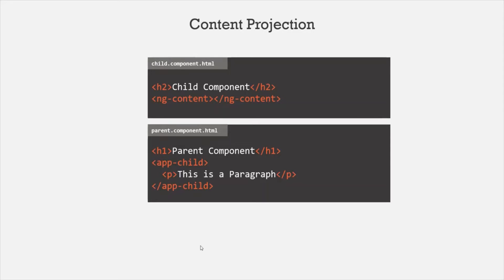We project content from our parent component to the child component using the ng-content directive. Here we have this child component HTML, and inside it we have used this ng-content directive. Then in the parent component, within the component selector, we have specified a paragraph element. So when this HTML is rendered in the web page, this paragraph will be projected in place of ng-content — this is called content projection. From the parent component, we are projecting some HTML content to the child component.